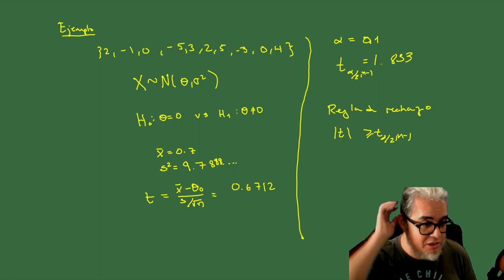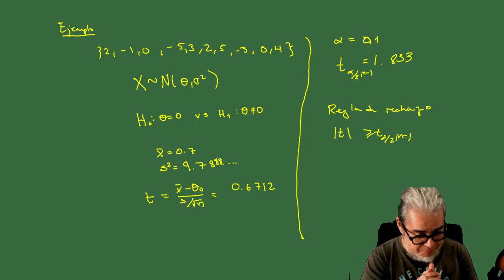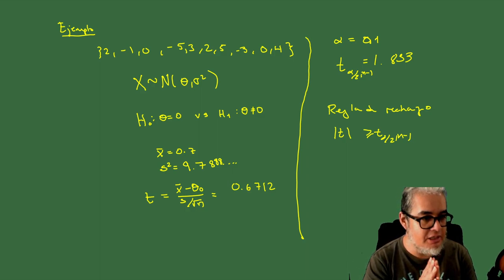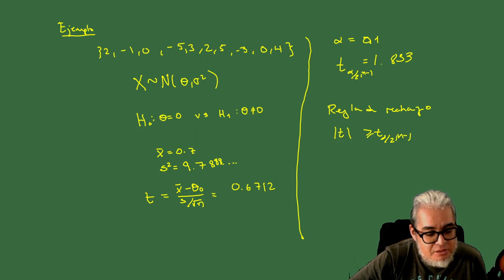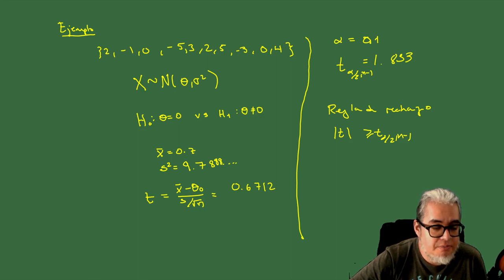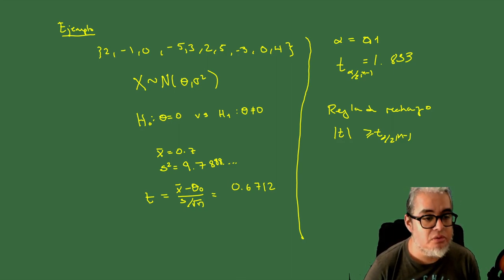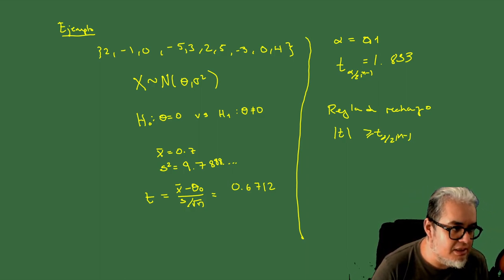Por hoy la dejamos aquí. La próxima sesión ya es la última de este minicurso; nos falta el caso donde tenemos dos normales y queremos hacer pruebas sobre la diferencia de las dos medias cuando las varianzas son conocidas, y cerraríamos el curso con el teorema de Neyman-Pearson. Nos vemos mañana en la siguiente y última sesión.